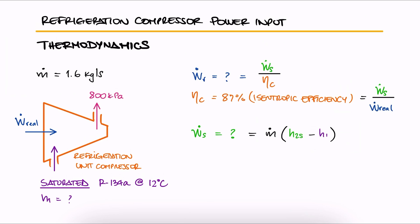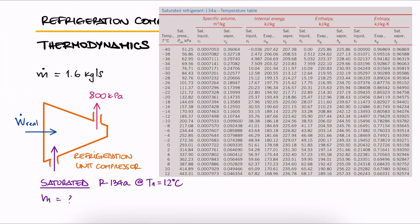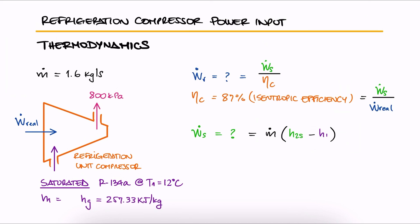For H1, we have a saturated vapor and its temperature. This tells us that we can go to the saturated refrigerant tables by temperature and look up HG for T1. That HG would be H1.